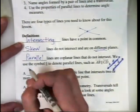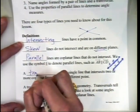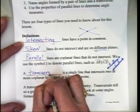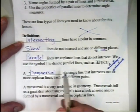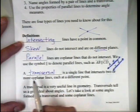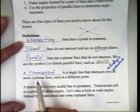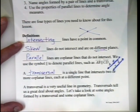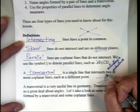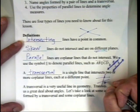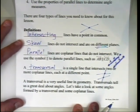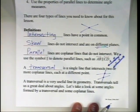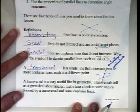Another type of line is called a transversal — which literally means 'to cross.' A transversal is a single line that intersects two or more coplanar lines each at a different point. A transversal is very useful in geometry because it tells us a great deal about angles.